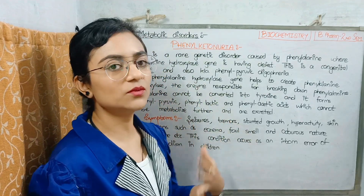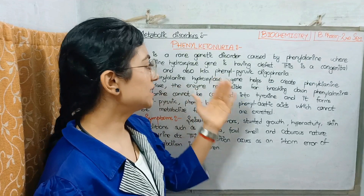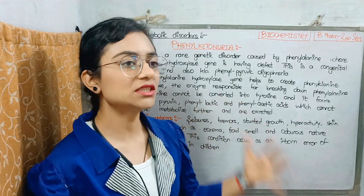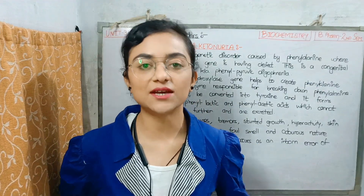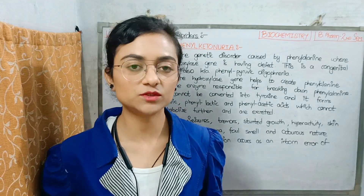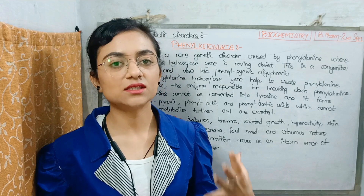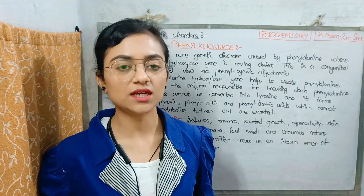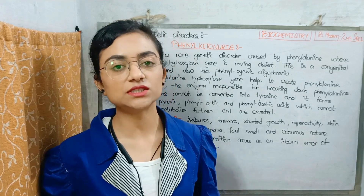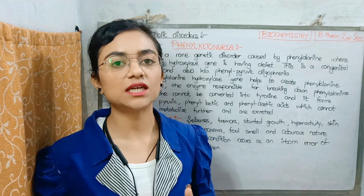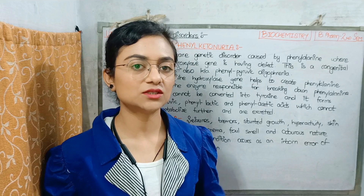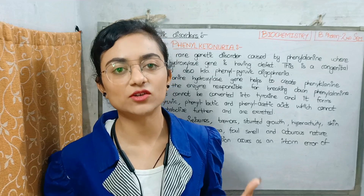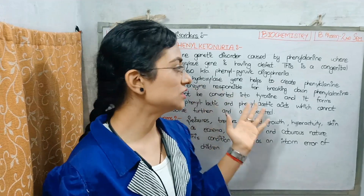So what is phenylketonuria? Phenylketonuria is related to phenylalanine. In phenylketonuria, the phenylalanine hydroxylase enzyme is deficient, so phenylalanine cannot be converted into tyrosine. When this enzyme is deficient, phenylalanine can't be converted to tyrosine.